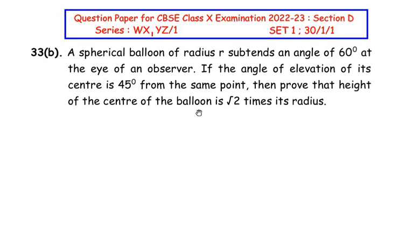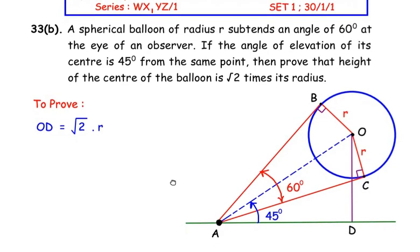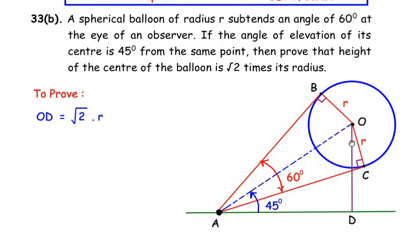Let us understand this question by drawing a figure. The figure is worth one mark for these kinds of questions, so make sure you draw it neatly. The blue circle represents the spherical balloon, and the radius of this balloon is taken as r, so OB and OC represent the two radii of the circle with center O. The radii subtend an angle of 60 degrees at the eye of the observer, where A is the observer. The angle of elevation of the center O from point A is 45 degrees with respect to the ground.